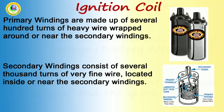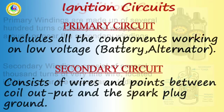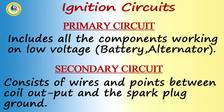The ignition system is divided into two circuits: the primary circuit and the secondary circuit. The primary circuit consists of a 6 or 12-volt battery, ammeter, ignition switch, and primary winding, which has 200 to 300 turns of 20-gauge wire. The secondary circuit consists of secondary winding, which has about 21,000 turns of 40-gauge wire.